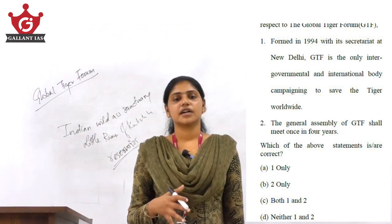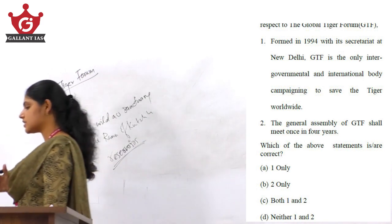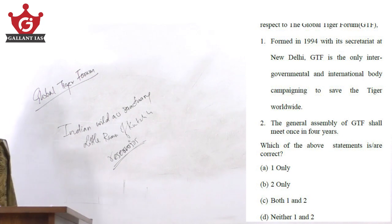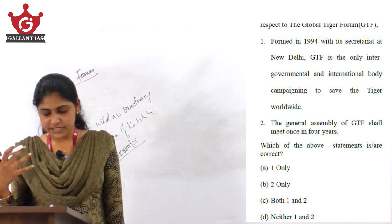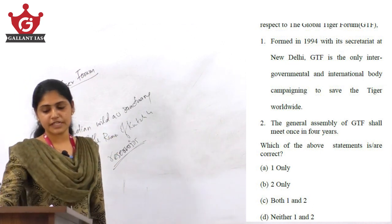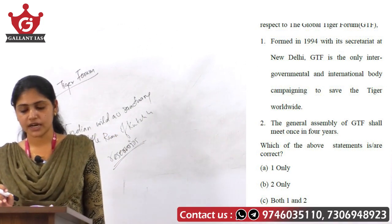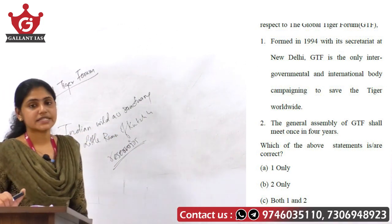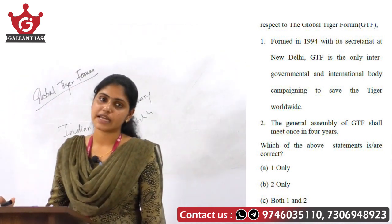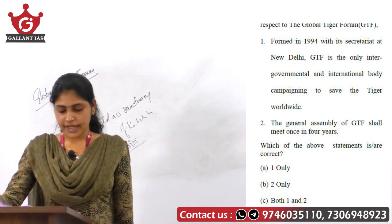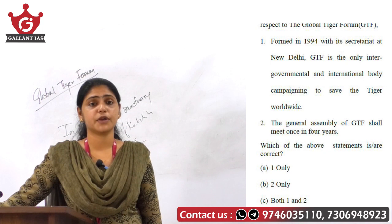The second statement says the General Assembly of the Global Tiger Forum shall meet once in four years. However, the General Assembly actually meets once in three years, not four years. That is why the second statement is wrong, and the answer turns out to be option A, one only.